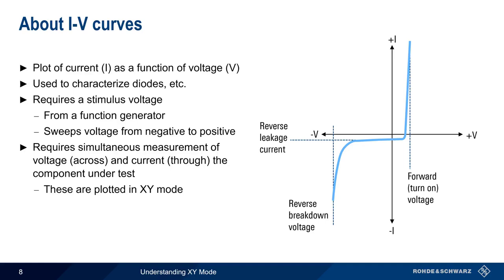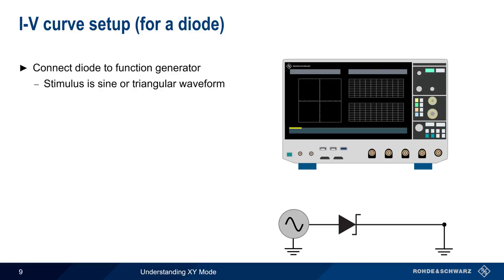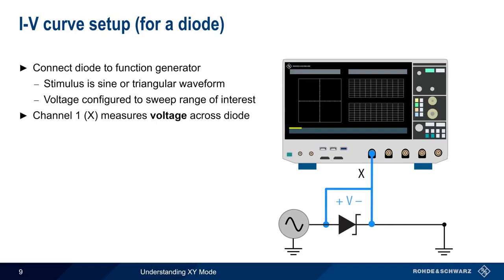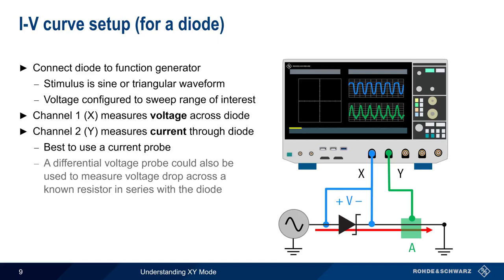Let's walk through this step by step using a Zener diode as an example. The first step is to connect the diode to a function generator — note that many modern scopes have an internal function generator that can be used for this purpose. An appropriate stimulus signal, usually a sine or triangular waveform, is generated such that the voltage sweeps the range of interest. For a Zener diode, we would want the voltage to start below the reverse breakdown voltage and end somewhere above the forward or turn-on voltage. We then configure the X channel to measure the voltage across the diode and the Y channel to measure current through the diode. The best way to do this is to use a special current probe that clamps around the conductor, but other methods can be used — for example, calculating current by using a differential voltage probe to measure the voltage drop across a known resistor in series with the diode. Once the two channels have been configured, enabling XY mode will cause the IV curve to be plotted on the oscilloscope display.